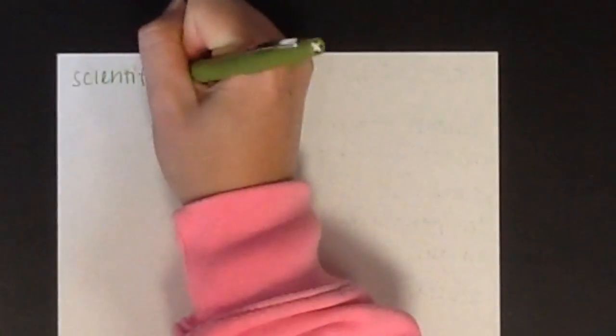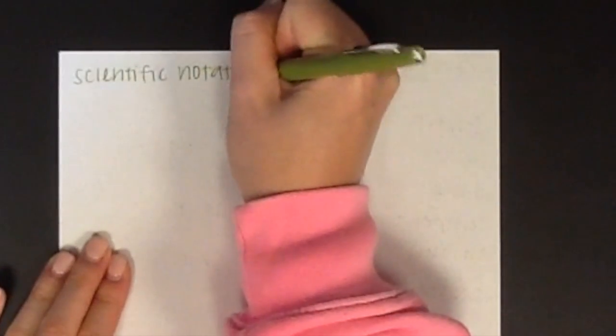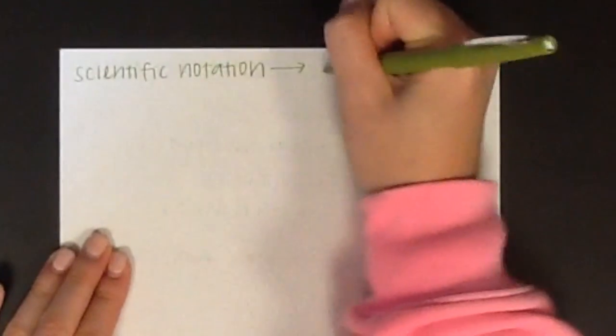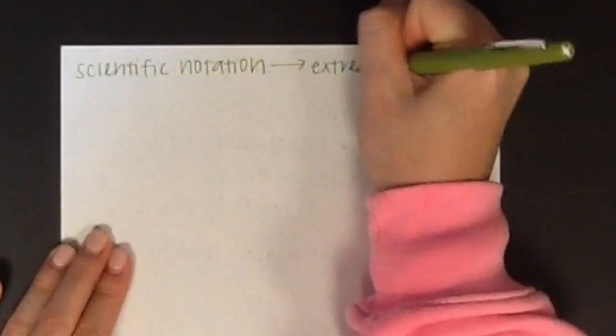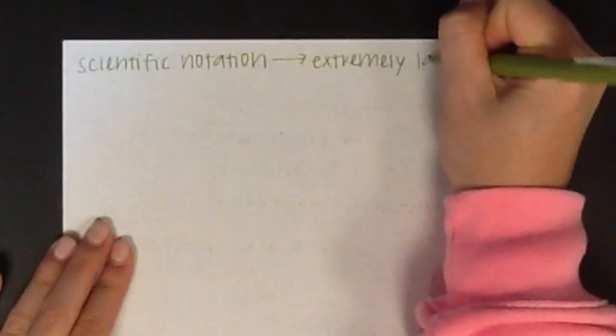Scientific notation is an exponential notation used to denote extremely small or extremely large numbers. Let's do an example of converting a standard number to scientific notation and from scientific notation to a standard number.